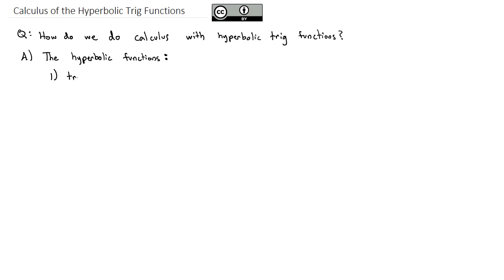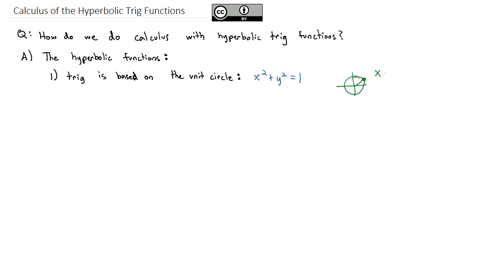The trig that you know and have seen up to this point is based on the unit circle. The equation for the unit circle is x squared plus y squared equals 1, and we end up with a circle with a radius of 1. For any point on that circle, the x value is equal to what we call the cosine, and the y value is equal to what we call the sine. All of trigonometry is built on this unit circle.